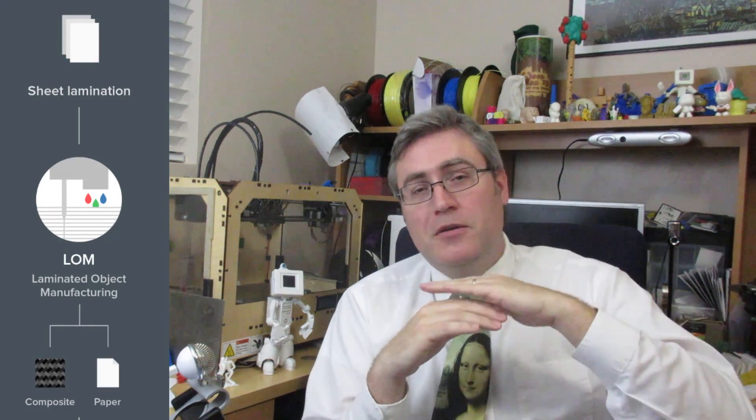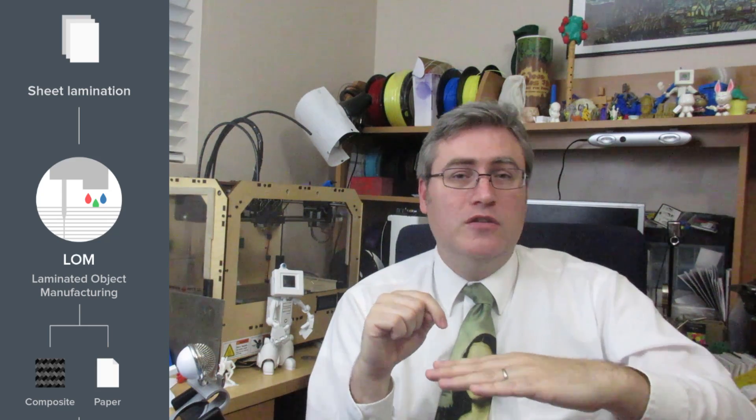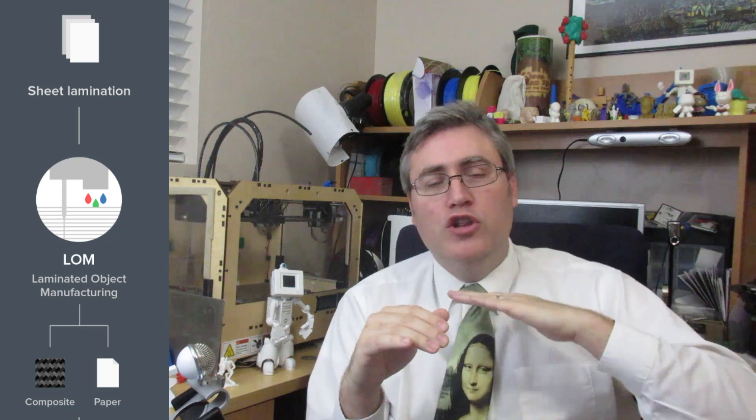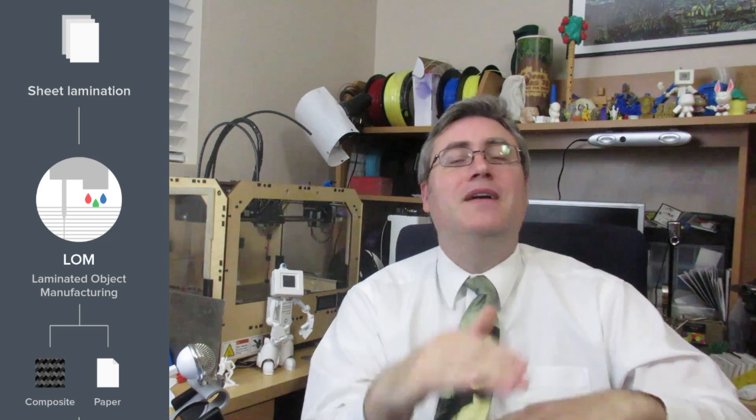And lastly, well, lastly on the infographic anyways, is sheet lamination. This is literally laying down a piece of paper, cutting it out to the shape that you want with a cutter like a cricket cutter, gluing, laying down some glue with an inkjet printer, laying down another piece of paper, cutting out that layer. Layer by layer building up your print.